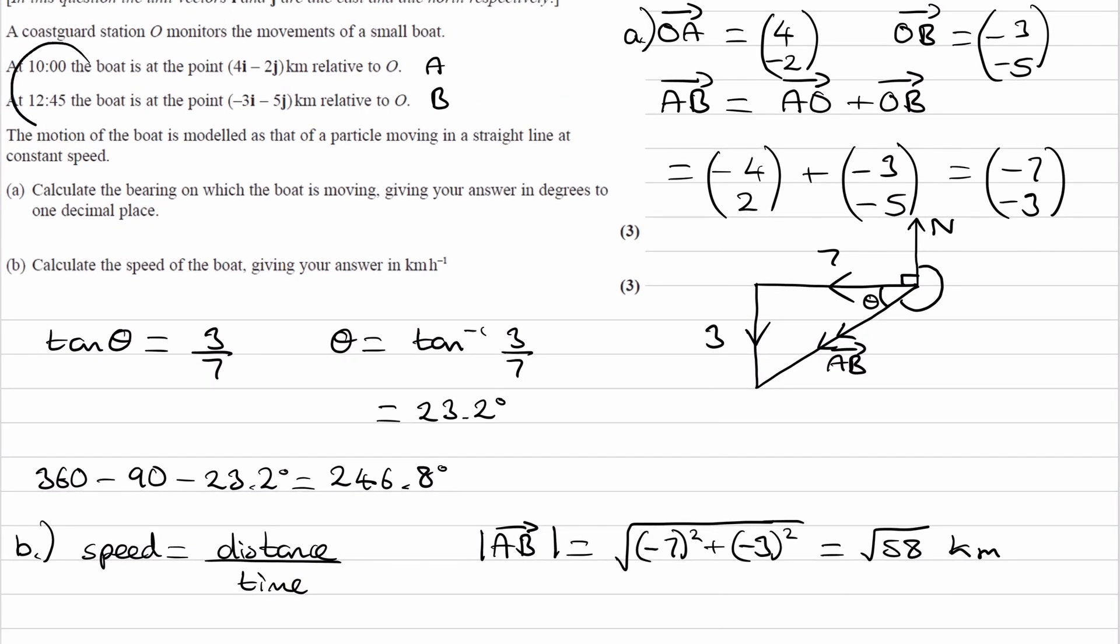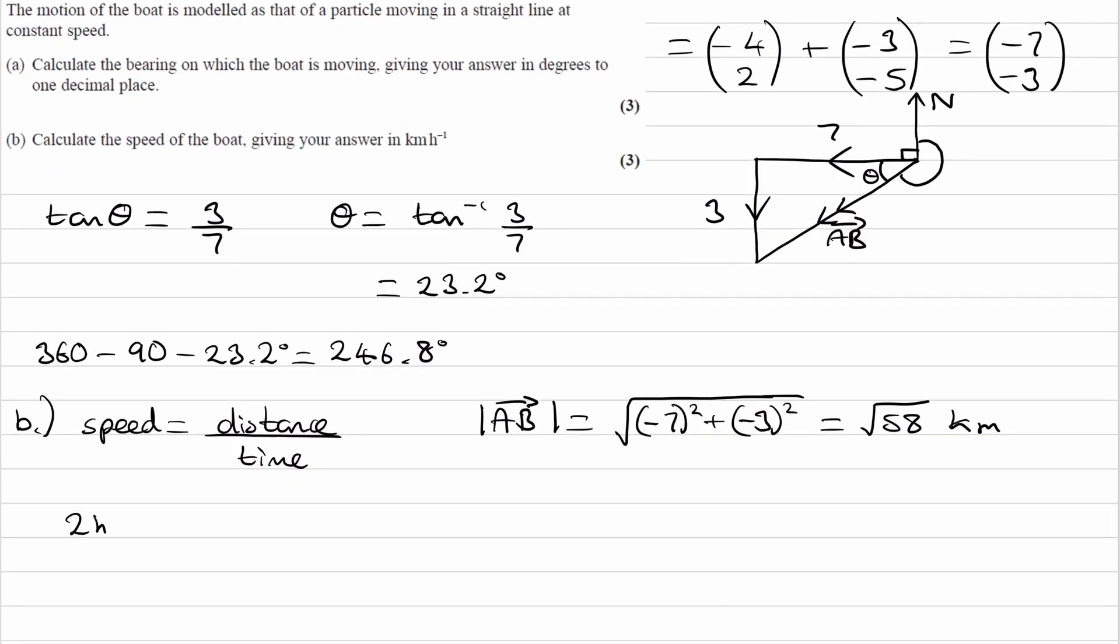If you look at the two times, it's 10 o'clock, and then it goes to 12:45. That's two hours and 45 minutes. But we want it as a decimal. We can't just put in 2.45, because 0.45 is not the fraction of the hour that we have. If we do 45 divided by 60, that gives us 0.75, which is the fraction of the hour that we have.